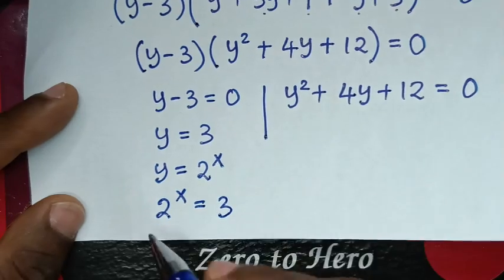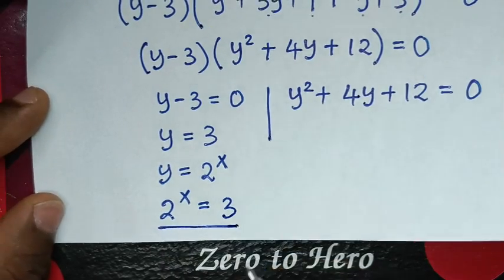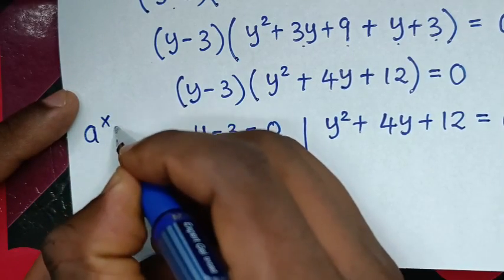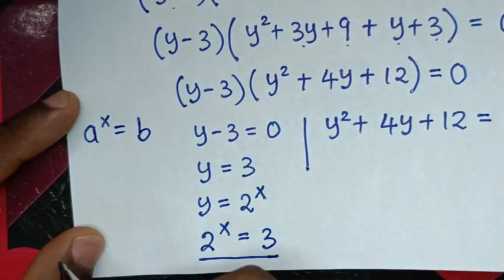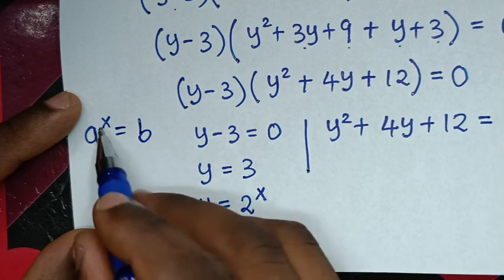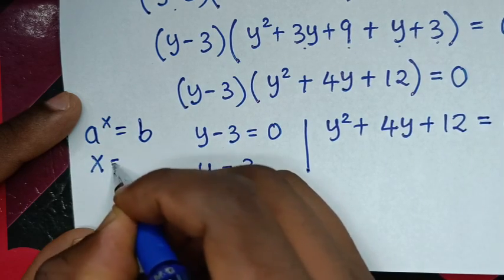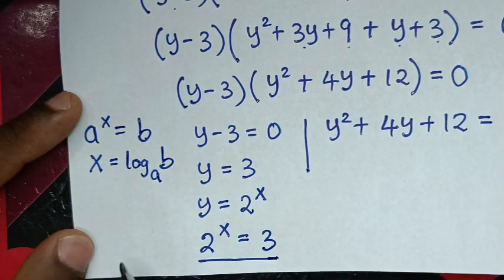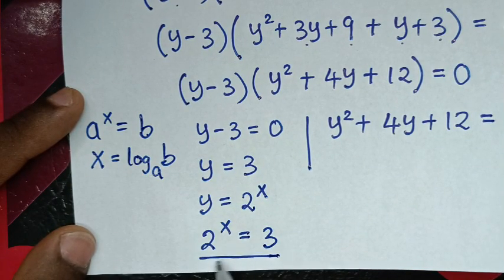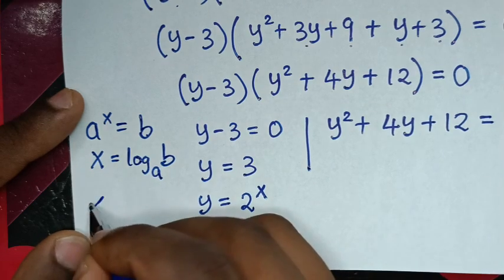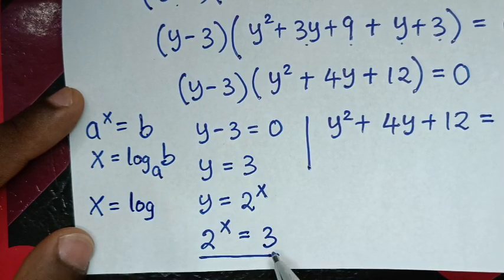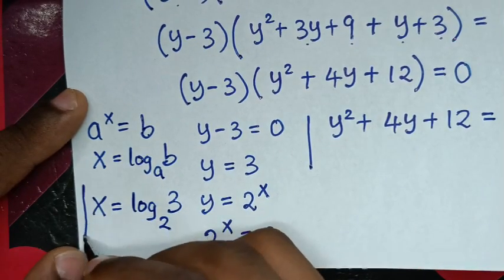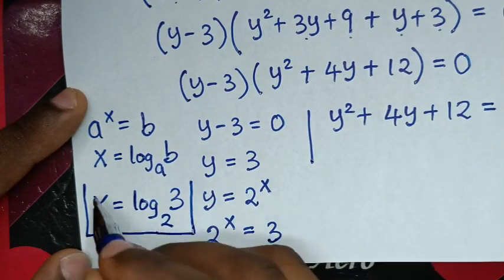In the next step, 2^x = 3 is in the form a^x = b. By applying the logarithmic rule, x equals log base a of b. Therefore x equals log base 2 of 3. This is the final answer for the value of x.